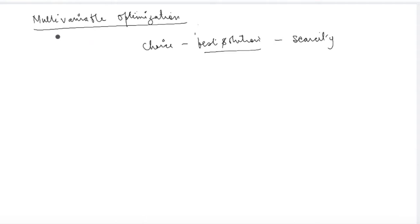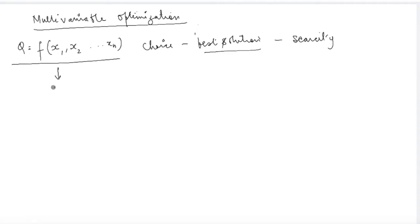Specifically, we are going to look at functions where input variables are more than one. For example, a profit-maximizing firm choosing the best output to be produced has inputs x1, x2 till xn. You have a function of these inputs — this is called the objective function. The profit function depends on these many inputs, so this is the objective function, and it is obviously a function of several variables.